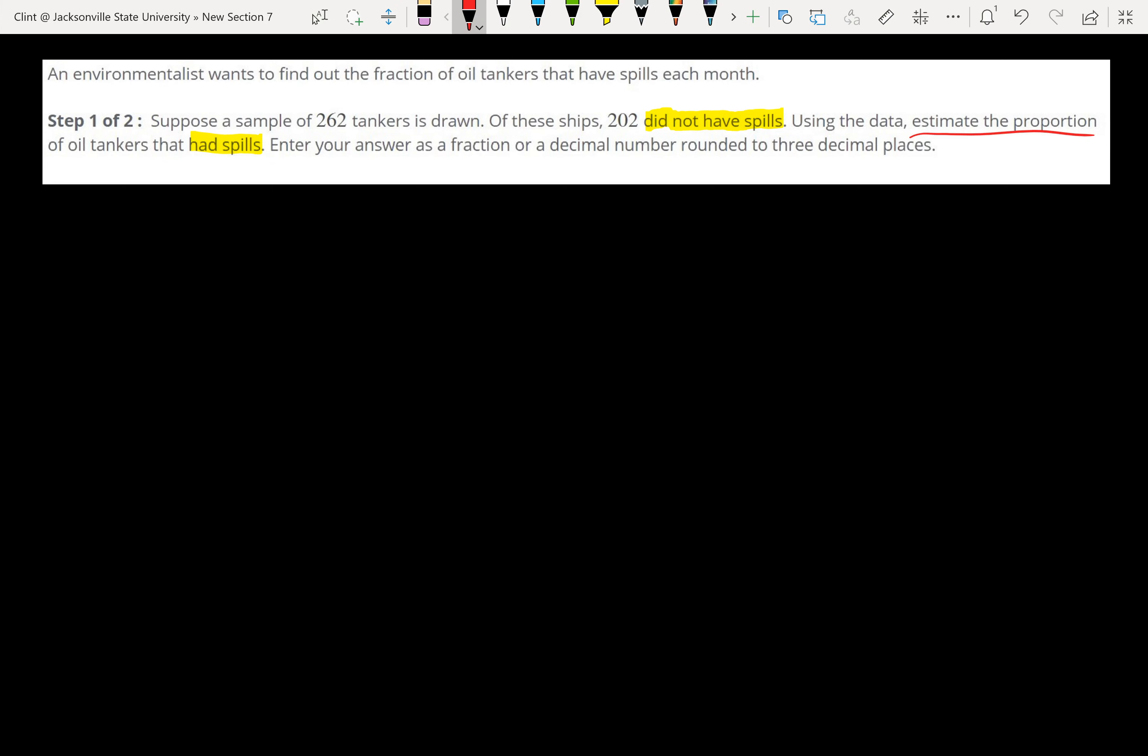To get a sample proportion here, which is what we're using, that is p-hat. We've got a little formula that says it's x over n. So x are the events that we're counting, the ones that we care about, and then n is the total number of events.